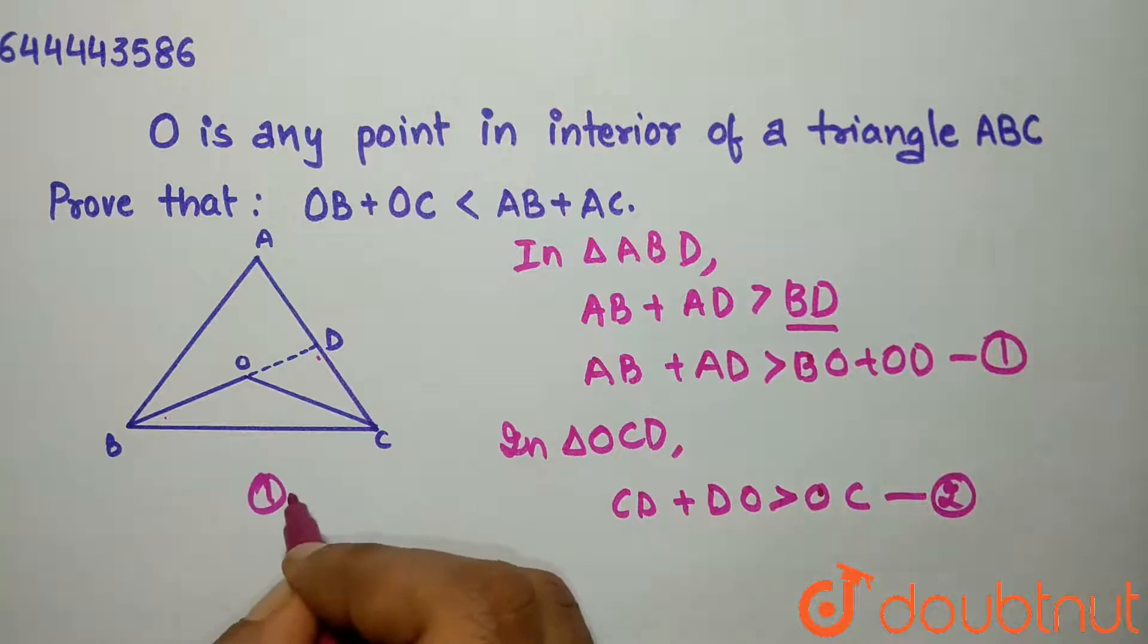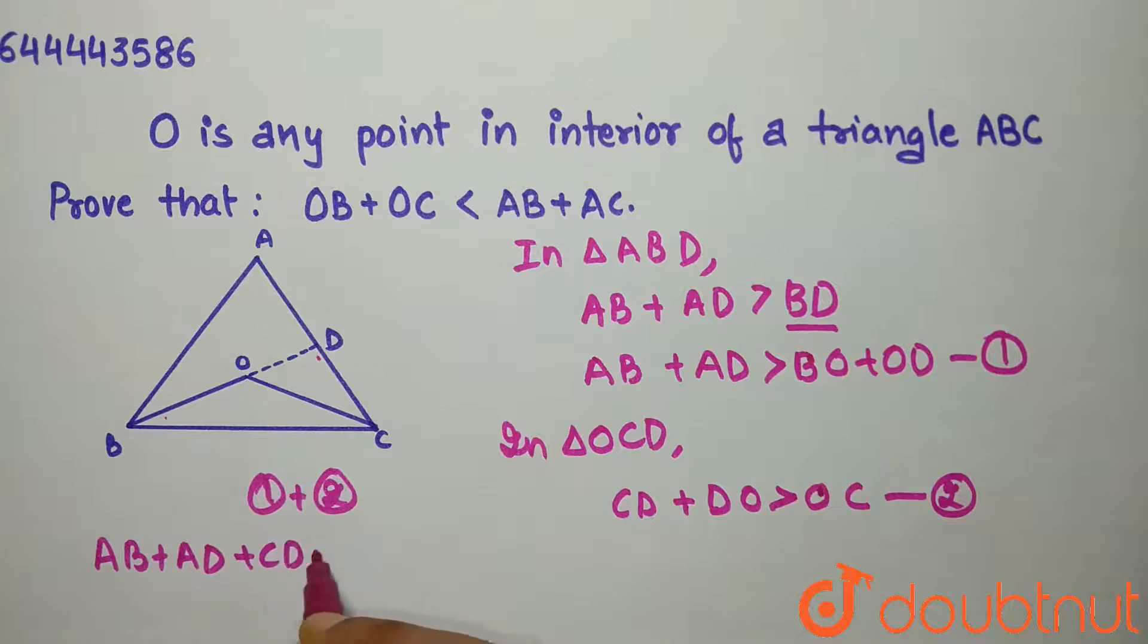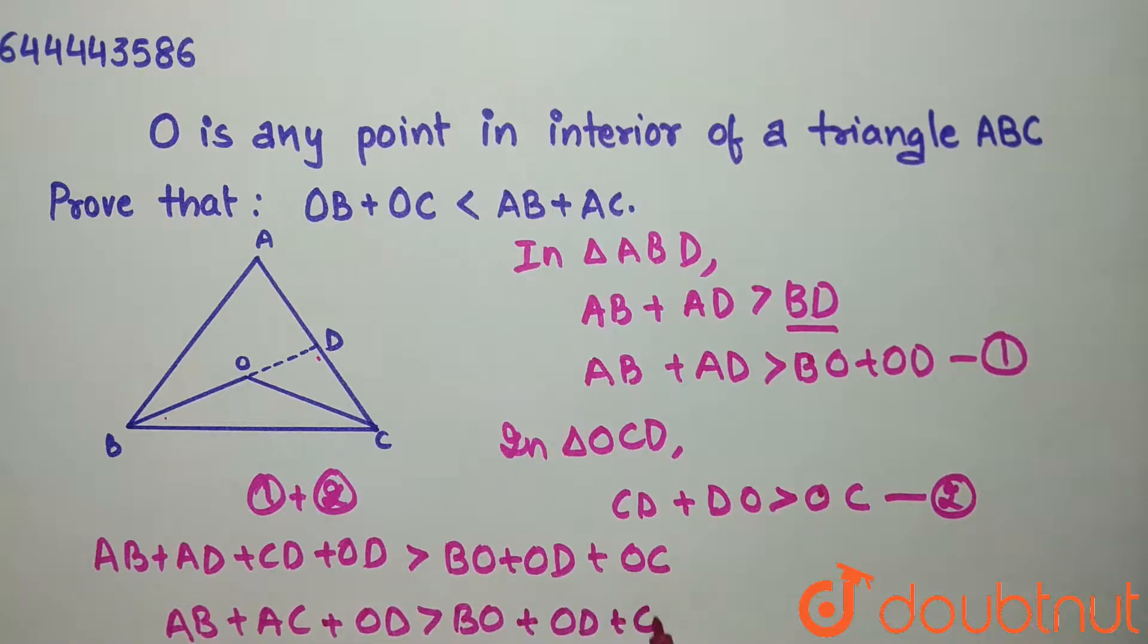Now add equations 1 and 2. You get AB plus AD plus CD plus OD is greater than BO plus OD plus OC. This becomes AB plus AC plus OD is greater than BO plus OD plus OC.